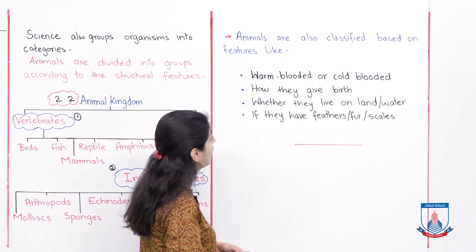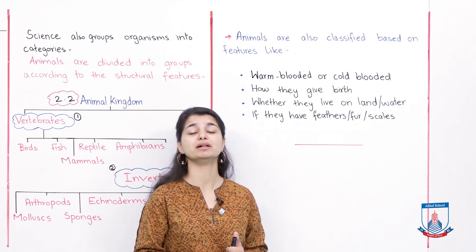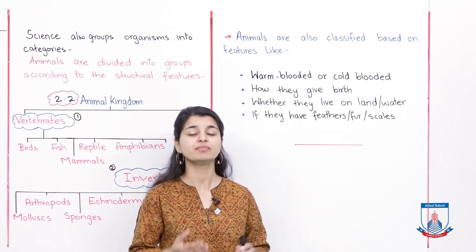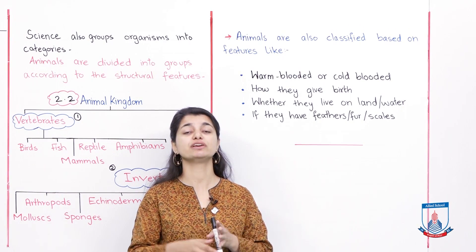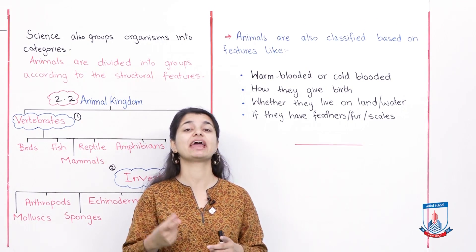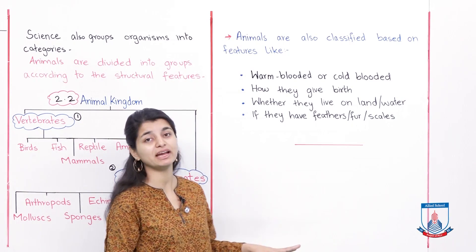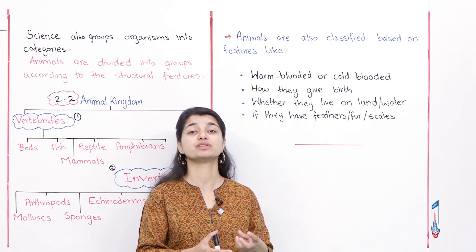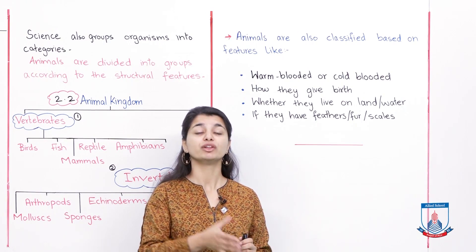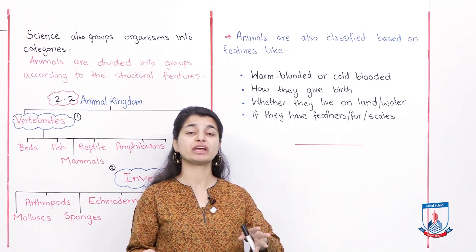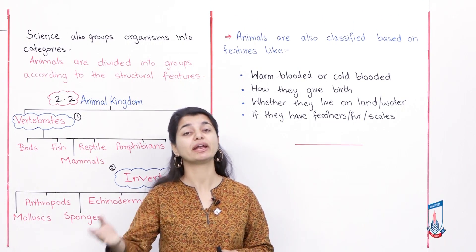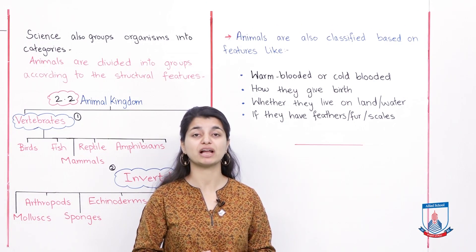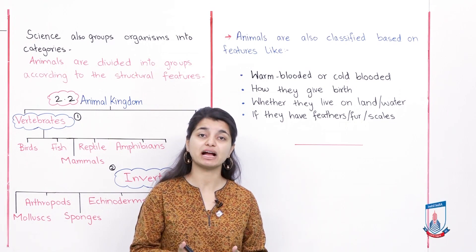Another way to classify is how they give birth. We have differentiated between mammals and reptiles: mammals give birth directly to offspring. For example, a cat - the kitten is born directly, it does not hatch from an egg. But a reptile lays eggs, and then after the egg hatches, the young is born. So there are two different methods of giving birth - some animals lay eggs, and some animals give birth to offspring directly.